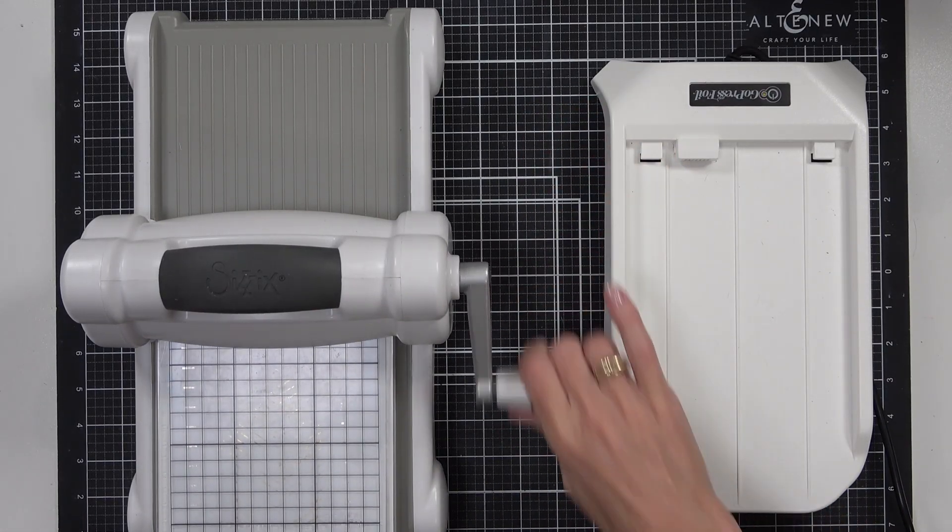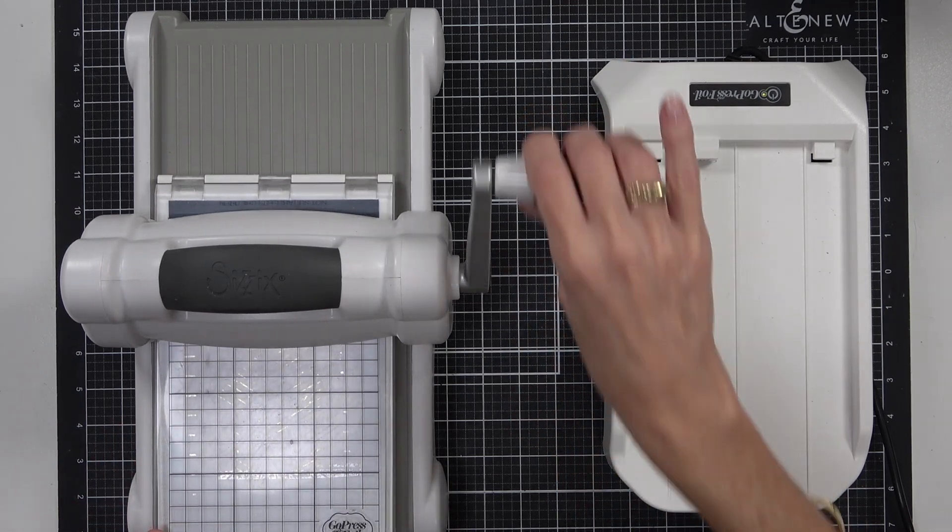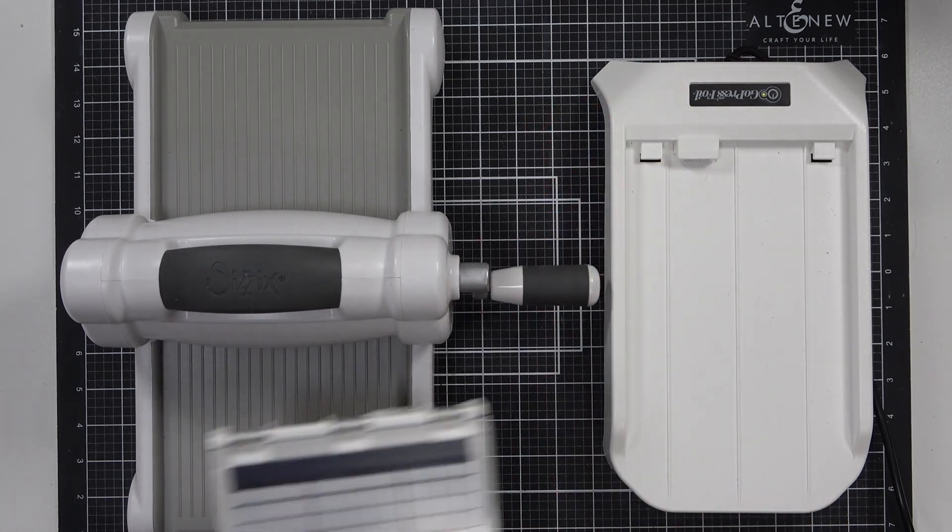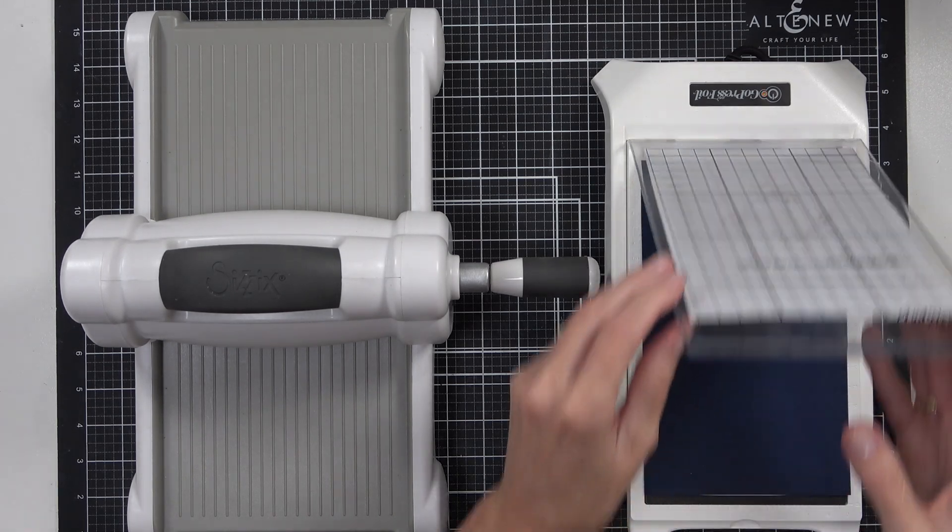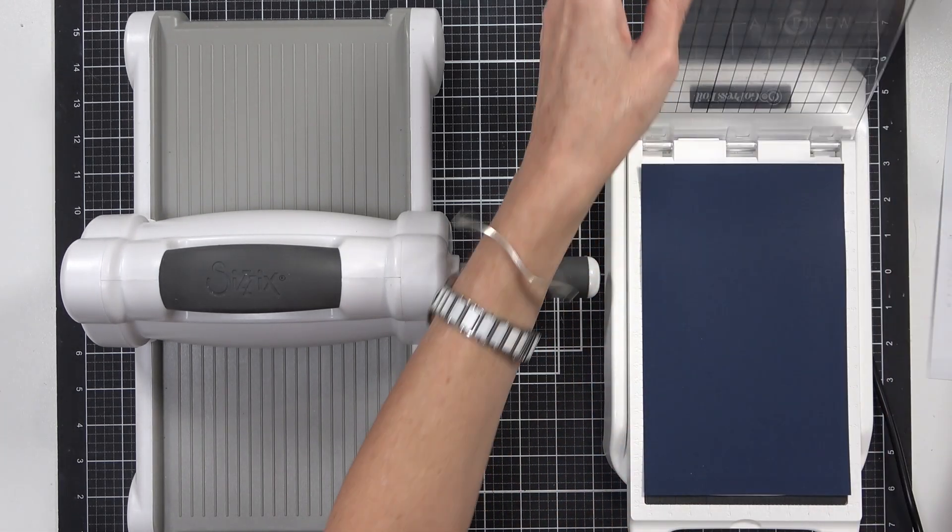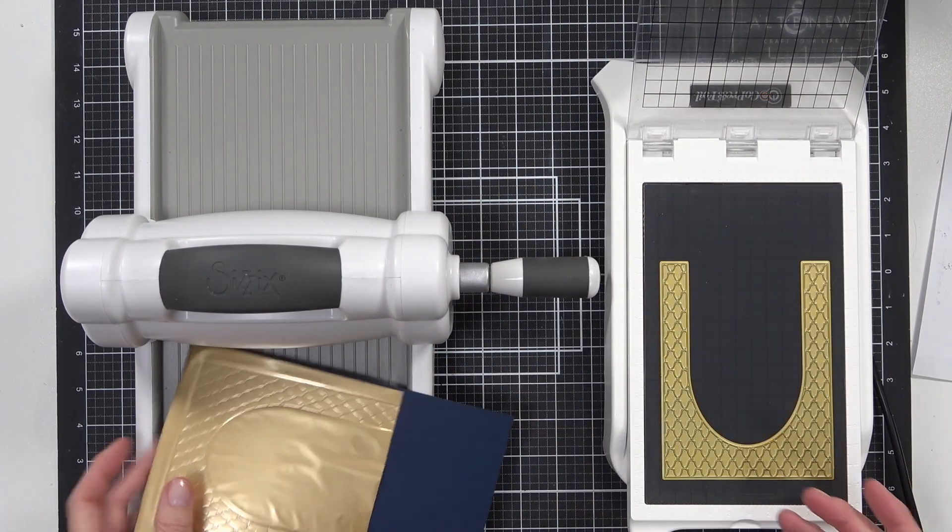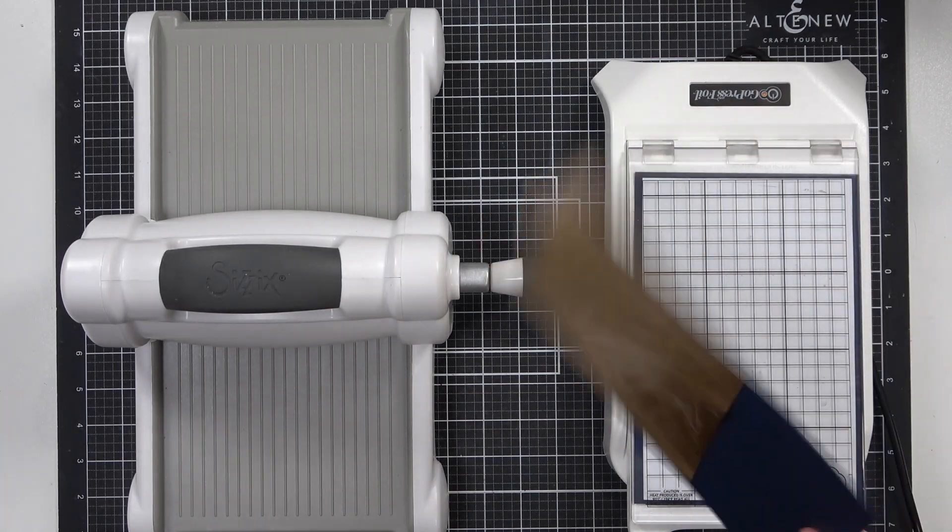I'm using my typical sandwich with the hot foil plate and some navy cardstock from Altenew. It's a really smooth cardstock and I've got the brushed gold hot foil, but you can use whatever supplies that you have. If you're not sure of the sandwich with your machine, then simply just do a little test piece before you commit to a whole piece of paper and a whole piece of hot foil.